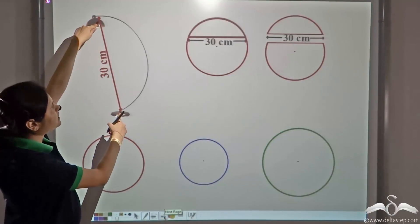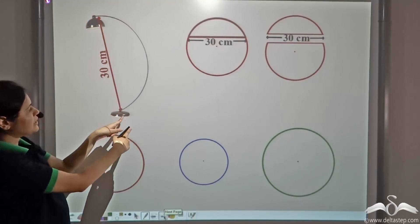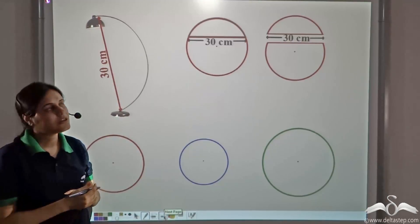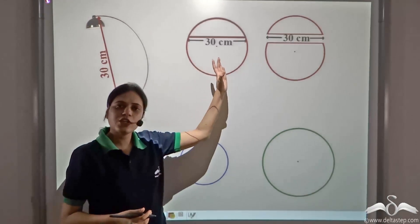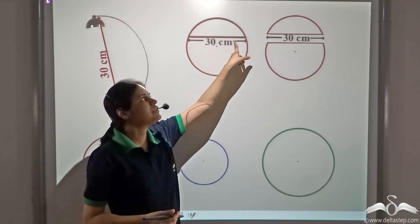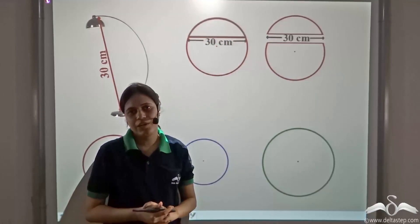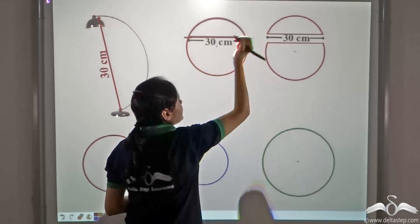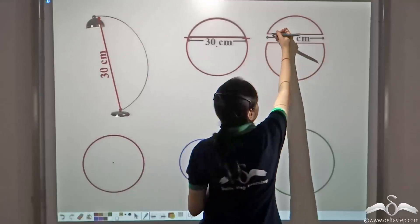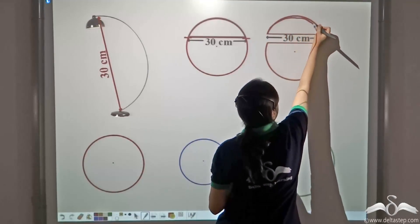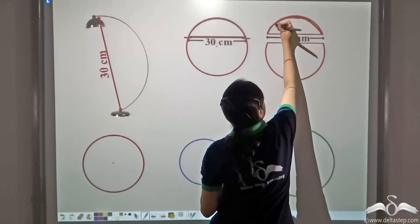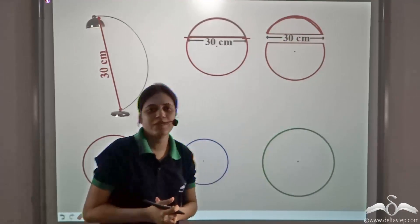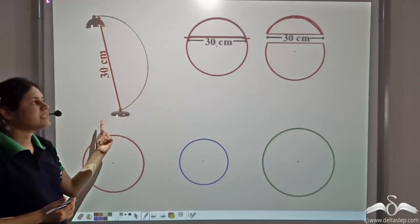He measures this part of the lamp and finds that the straight-line distance is 30 centimeters. So he takes one of the circular coils, measures a chord of 30 centimeters in that coil, makes a cut, and gets this arc. Using this arc with a chord distance of 30 centimeters, he will make this lamp.